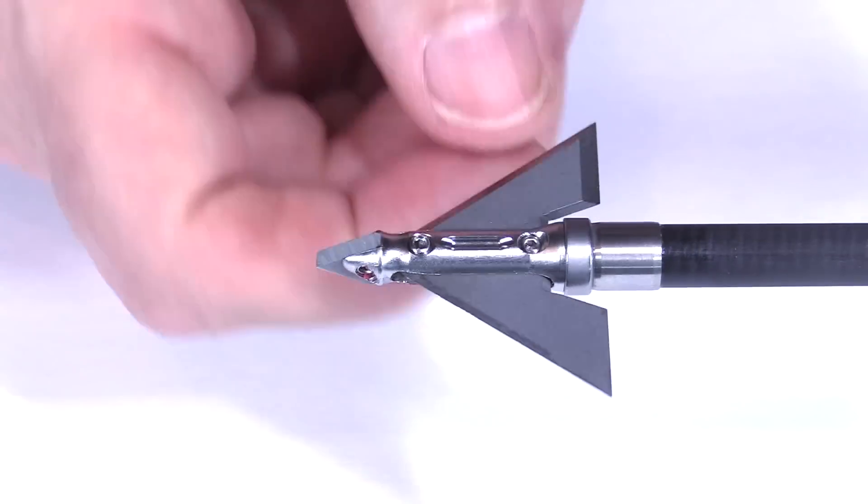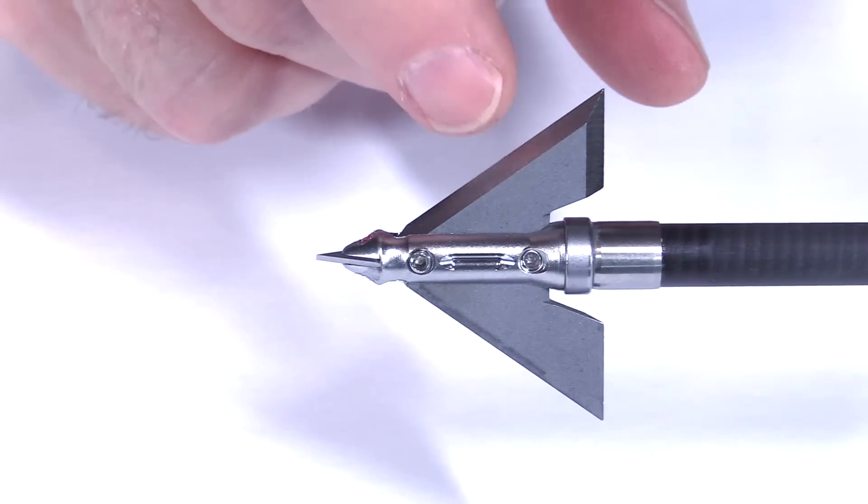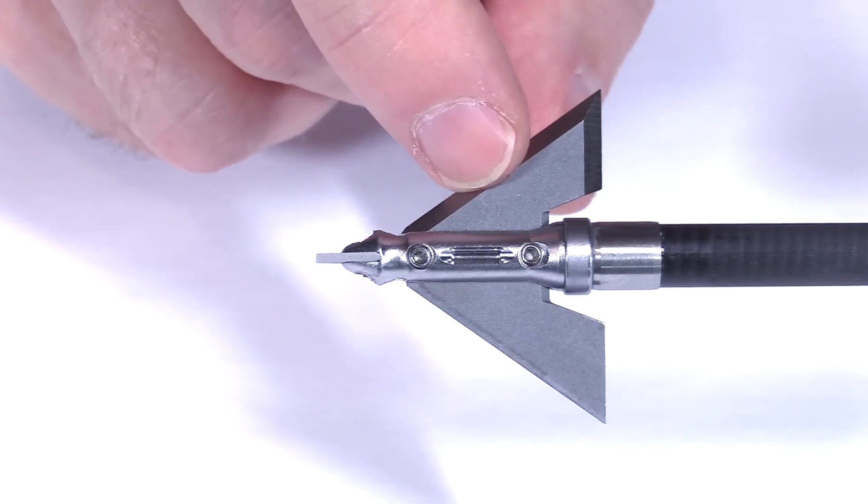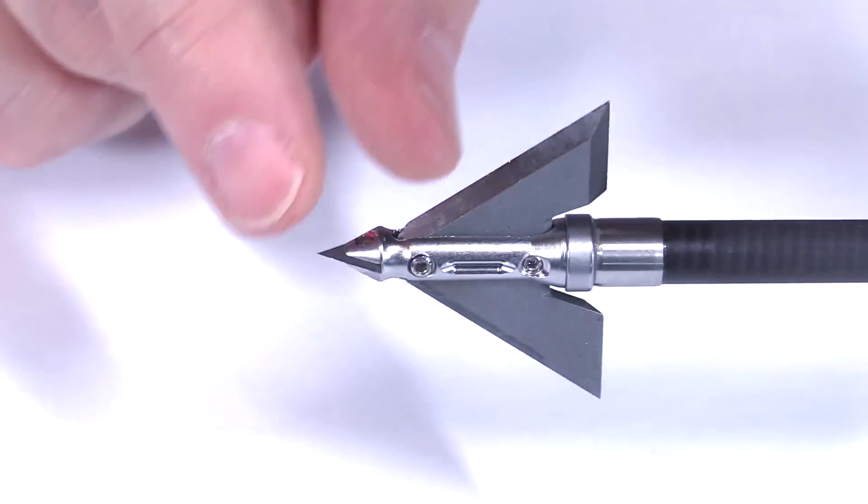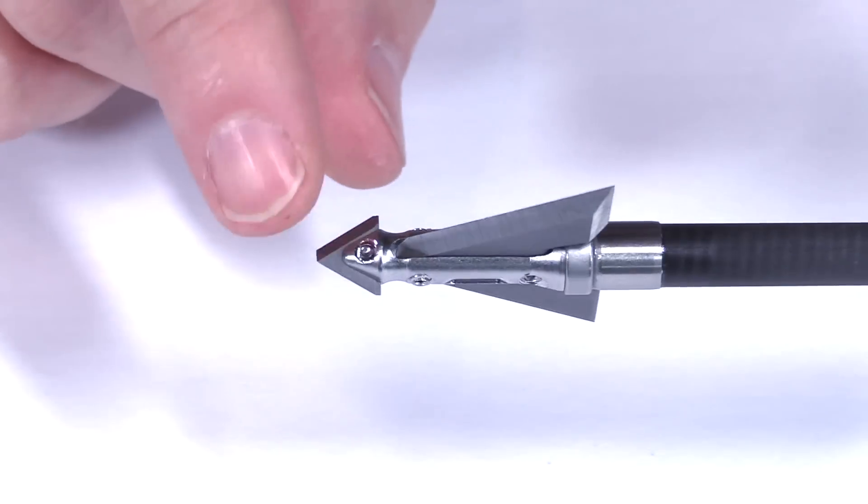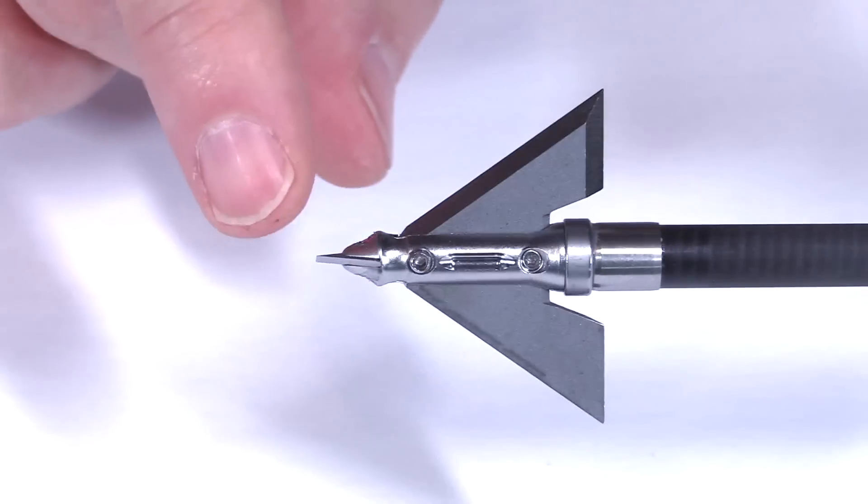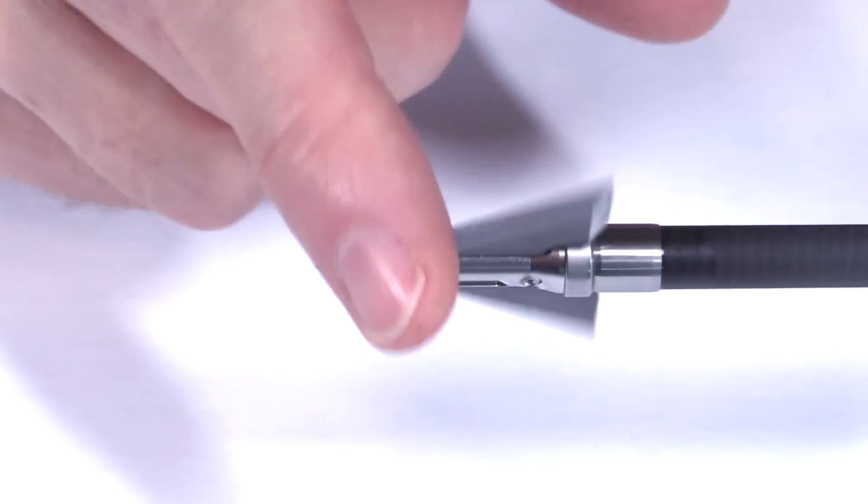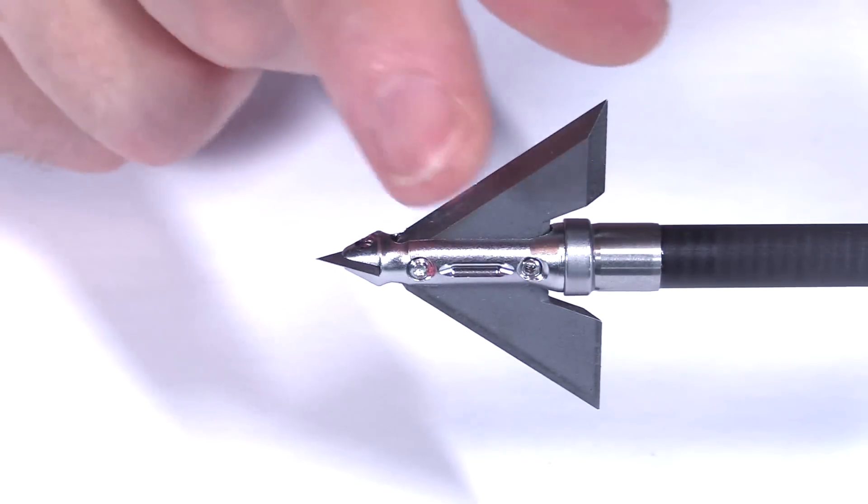The blades are single bevel sharpened all the way around, even on the back, to a 40-degree bevel angle, which is going to maximize durability as well as rotation. The tip is 40-degree bevel as well, and super easy to sharpen because there's just two edges to it. Same thing on this, and it's really easy to find that 40-degree.